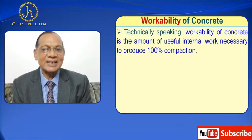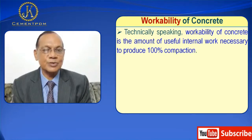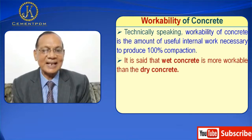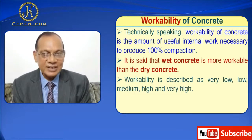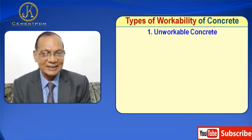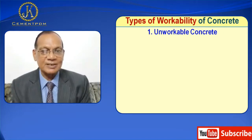Technically speaking, workability of concrete is the amount of useful internal work necessary to produce 100% compaction. It is said that wet concrete is more workable than dry concrete. Workability is described as very low, low, medium, high, and very high. Now, I will discuss about the types of workability of concrete.